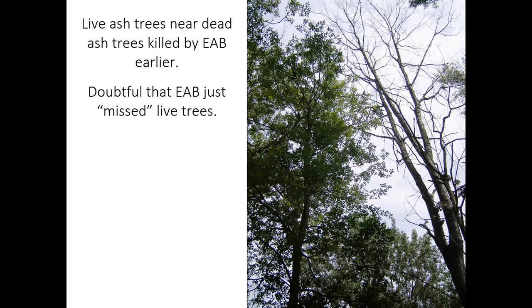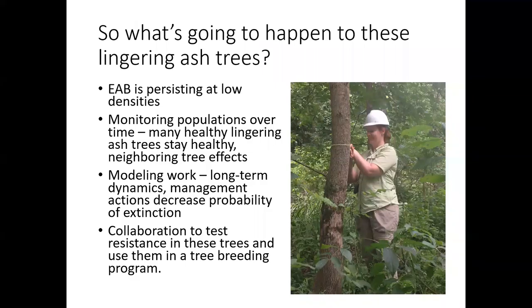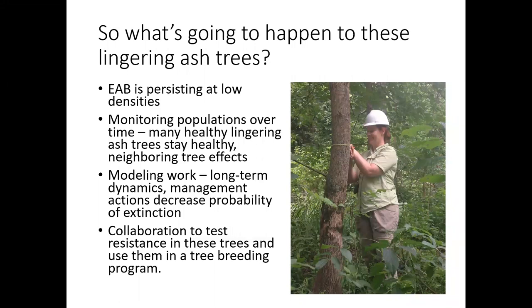The live ash trees that we find are often near dead ash trees that were killed by emerald ash borer much earlier. So it's doubtful that EAB just missed those live trees — emerald ash borer is really good at finding ash trees. We're continuing to monitor those populations of surviving ash trees over time, and we've seen that many of those healthy lingering ash trees do stay healthy over time, though some of them die. A postdoc working with me, Rachel Kapler, has done some really cool work showing that neighboring ash trees that are less healthy can actually have negative effects on the survival of the ash tree.